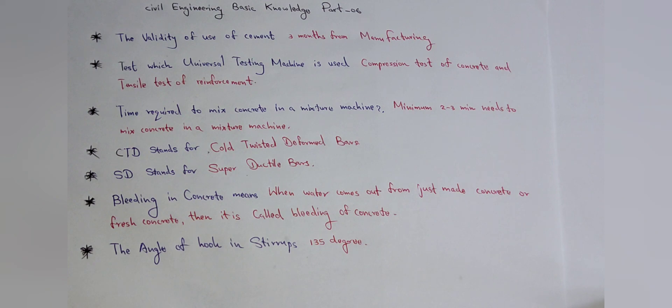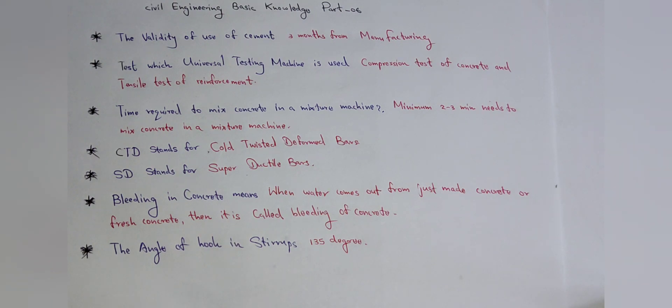Universal testing machine is used for the compression test of concrete and tensile test of reinforcement. So for two testings we use the universal testing machine: for compression test of concrete and for tensile test of reinforcement. Then the next one is time required to mix concrete.